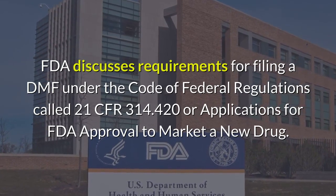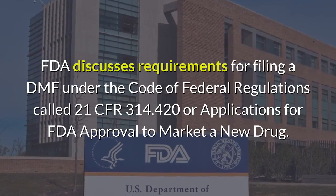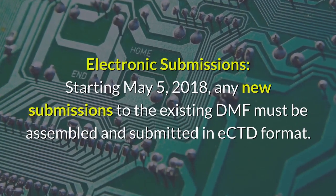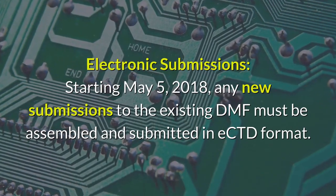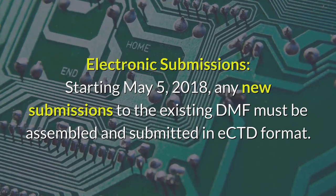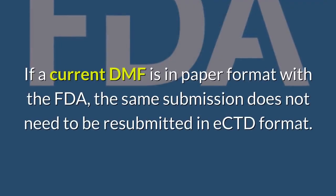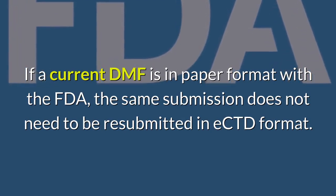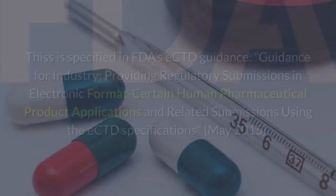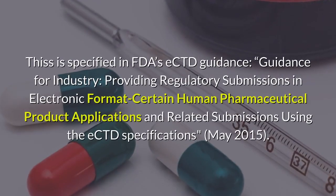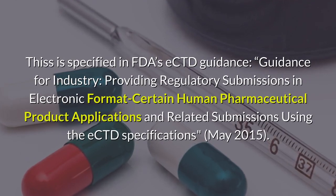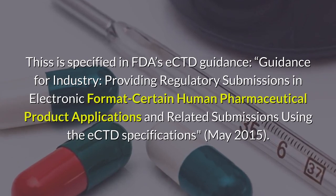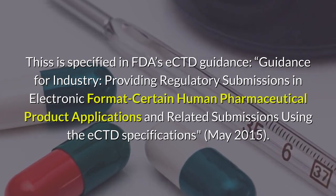FDA discusses requirements for filing a DMF under the Code of Federal Regulations, 21 CFR 314.420, or applications for FDA approval to market a new drug. Regarding electronic submissions: starting May 5, 2018, any new submissions to an existing DMF must be assembled and submitted in eCTD format. If a current DMF is in paper format with the FDA, the same submission does not need to be resubmitted in eCTD format, as specified in FDA's eCTD guidance for industry on providing regulatory submissions in electronic format, using the eCTD specifications (May 2015).